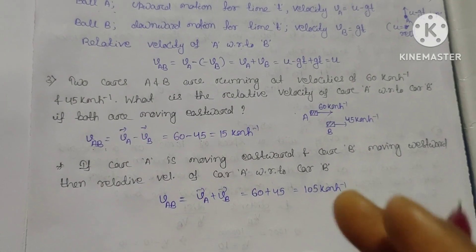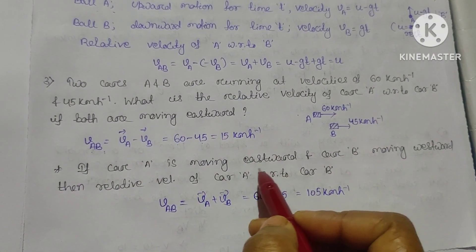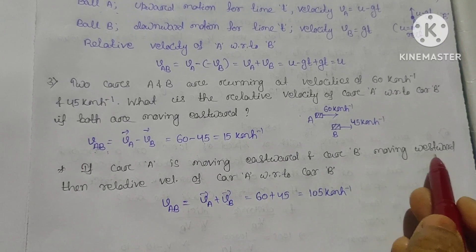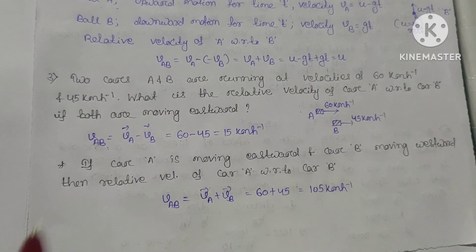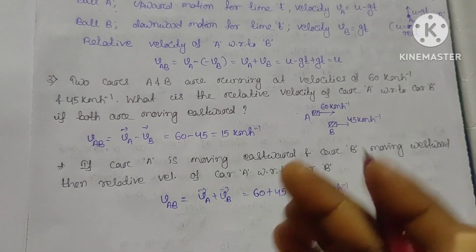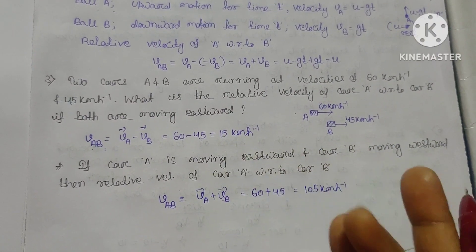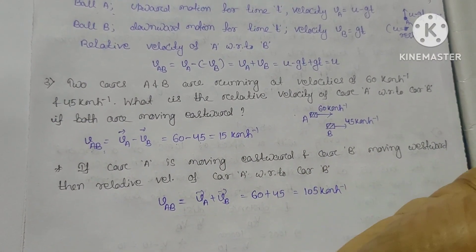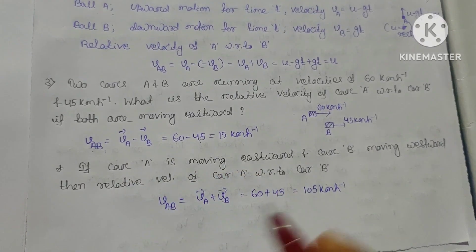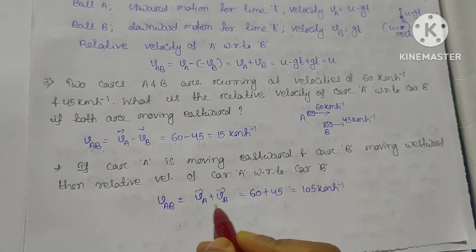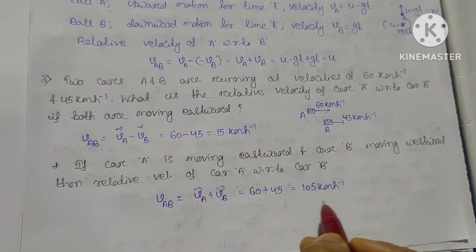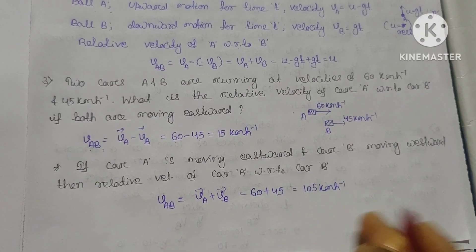If the same cars are instead moving in opposite directions — car A eastward and car B westward — then since they move in opposite directions, we add their velocities: VAB = 60 plus 45 = 105 km/hr.